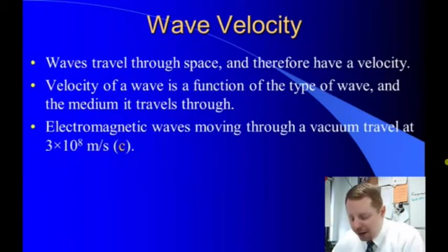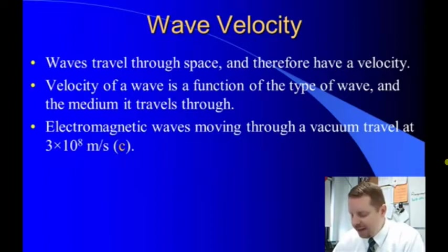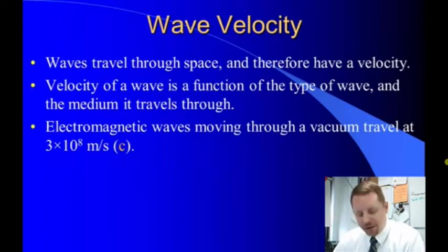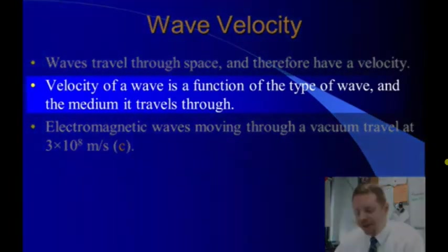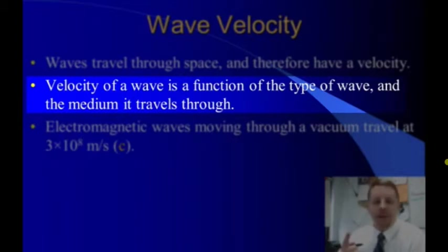When we talk about wave velocity, we have to realize that since waves travel through some sort of distance, they therefore have a velocity — they travel some distance in some amount of time. The velocity of a wave is a function of the type of wave and of the medium it travels through. That's very important: wave velocity depends on two things, the type of wave and the medium it travels through.